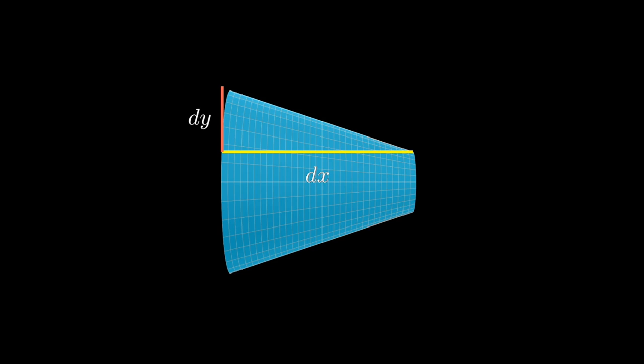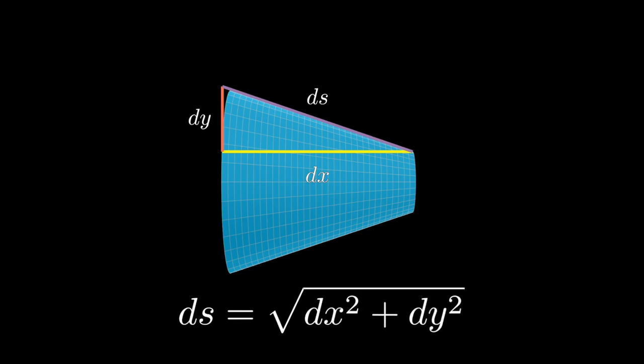So the length of the hypotenuse, which is l, is √(dx² + dy²). And this is often abbreviated as ds.